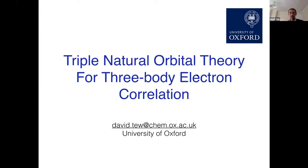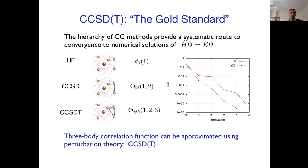So I'm going to talk today about triple natural orbital theory for three-body electron correlation. The context for this is we have a very good method which is the coupled cluster method that converges more or less exponentially towards the exact answer as you include higher body correlation - two body, three body, and so on. And for a wide variety of chemical systems that are more or less single reference, we can approximate three-body correlation with the parentheses T method.